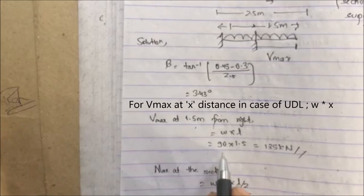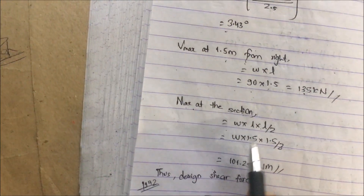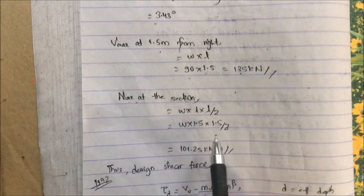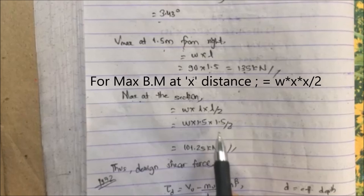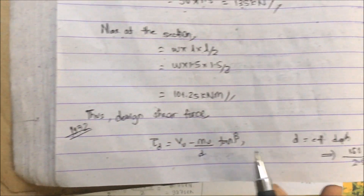Maximum bending moment at this section = w × L × L/2 = 90 × 1.5 × 1.5 / 2 = 101.25 kN·m, considering from the free end. Now we need to find the effective depth D at that section using similar triangles. With 450 mm depth over 2.5 m span, D at 1.5 m from free end gives x = 90 mm as the triangular portion height.